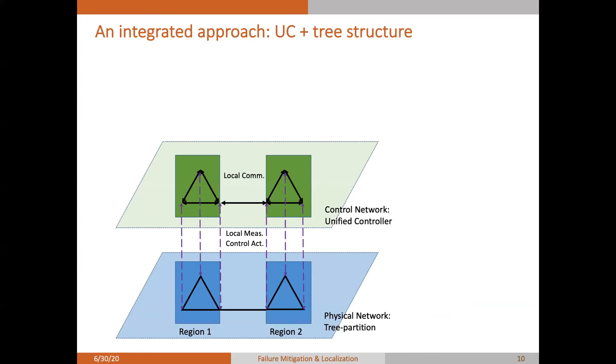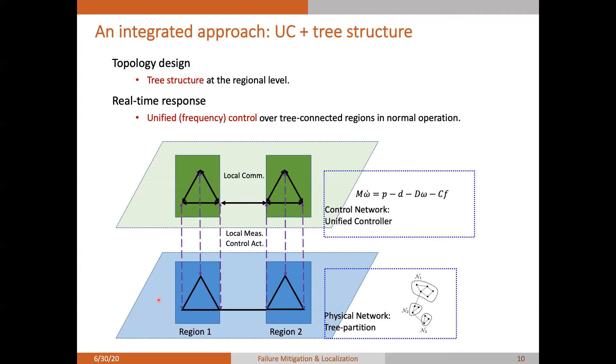So our proposed approach is to integrate the unified controller and the tree structure. For topology design, we propose to switch off a small number of timelines to create a tree structure at the original level. This will help to localize the failures. After the topology design, we will implement the unified frequency control over those tree connected regions as a normal operation. And it will respond to disturbances in real time.